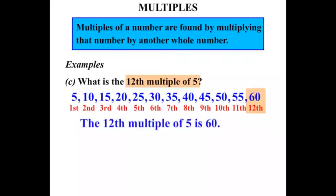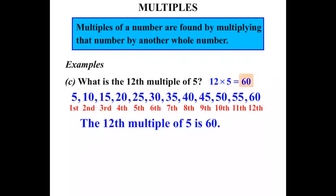So let's write that down. Now that's the long way of doing things. What about the short way? Well, the twelfth multiple of 5 — all we need to think about is 12 times 5, and 12 times 5 of course is equal to 60. So that's the quick way of doing things.